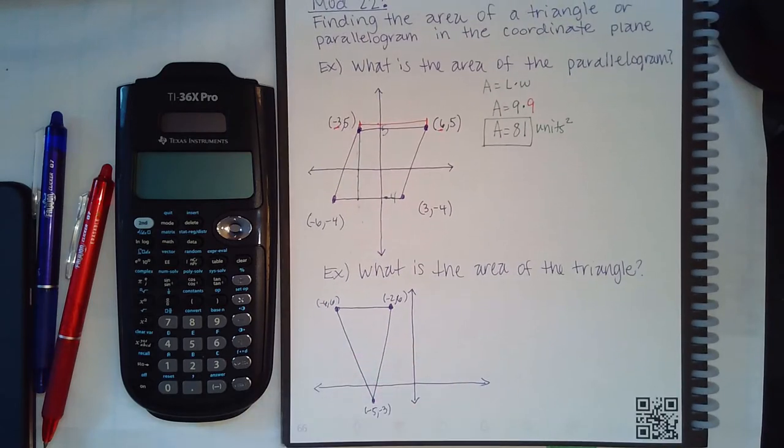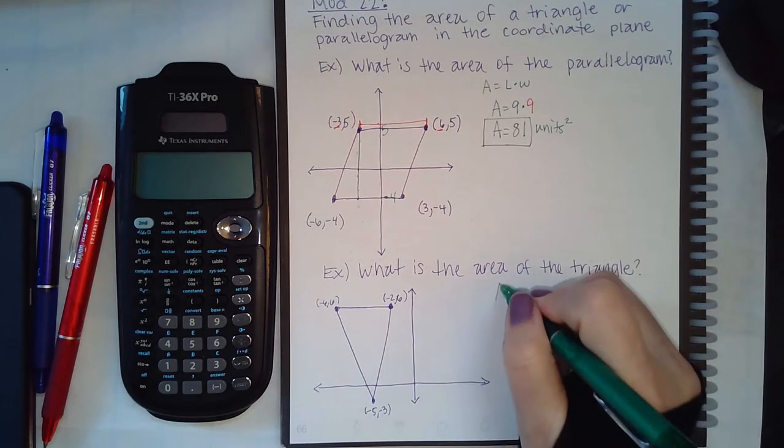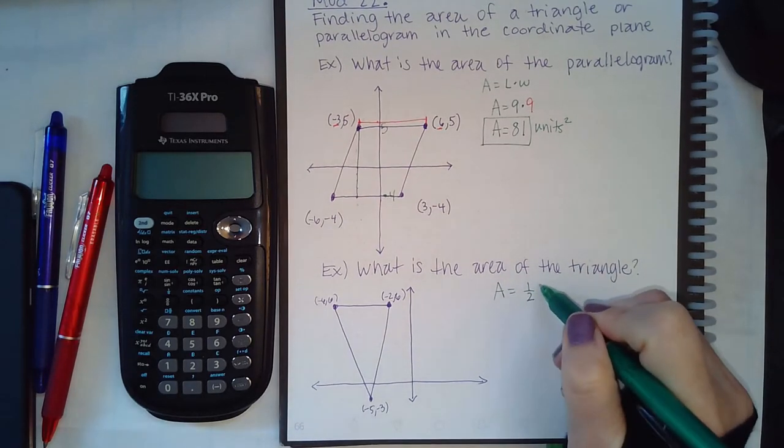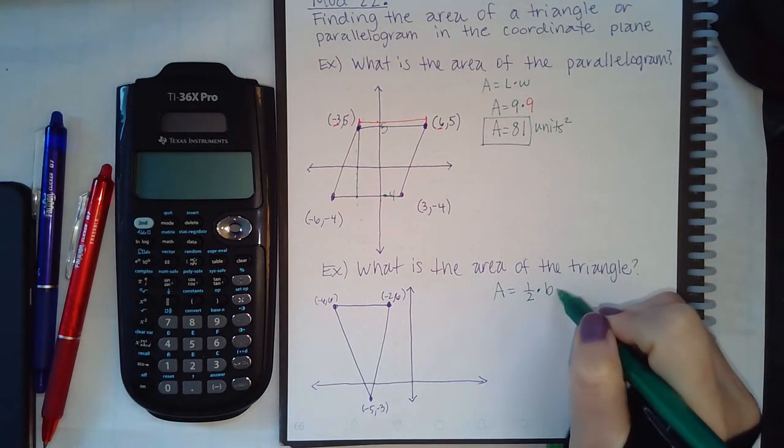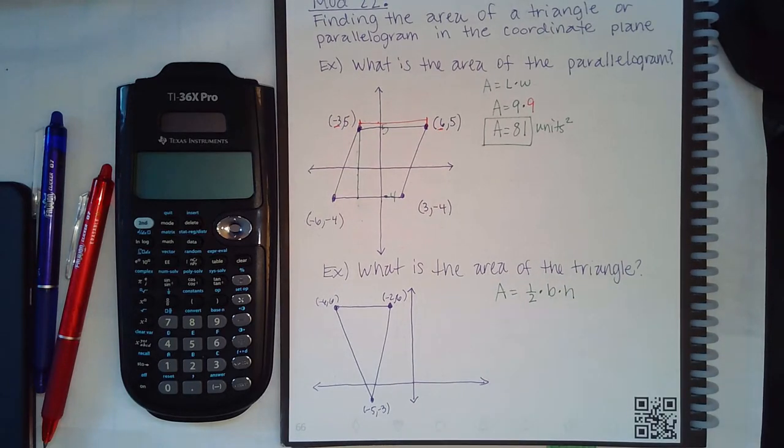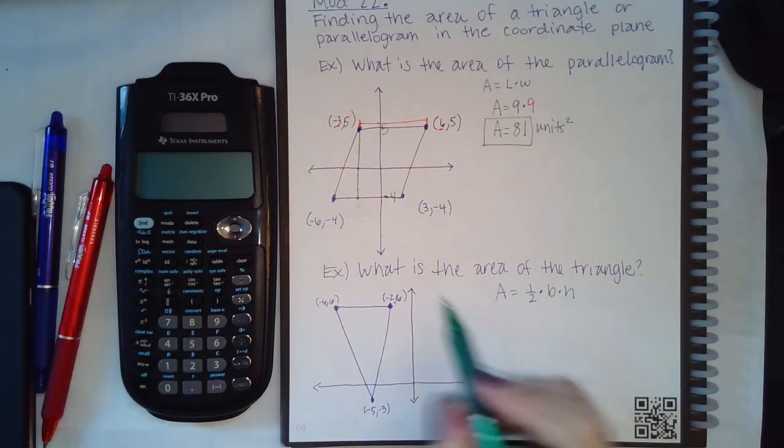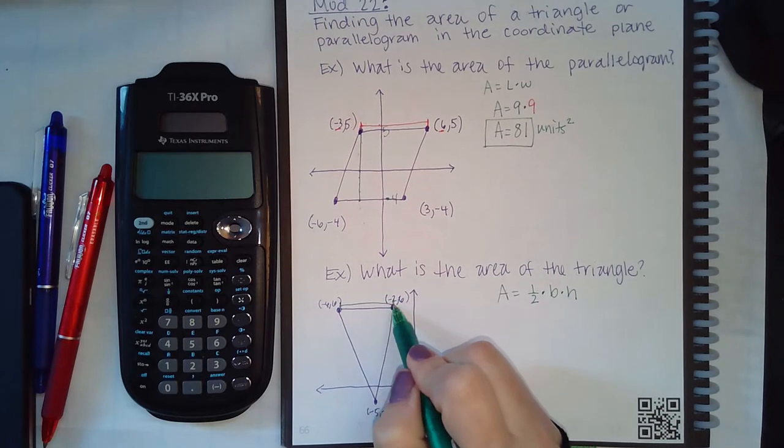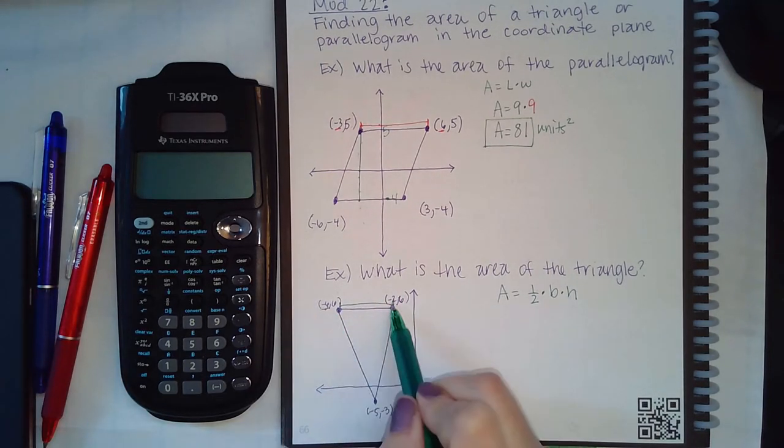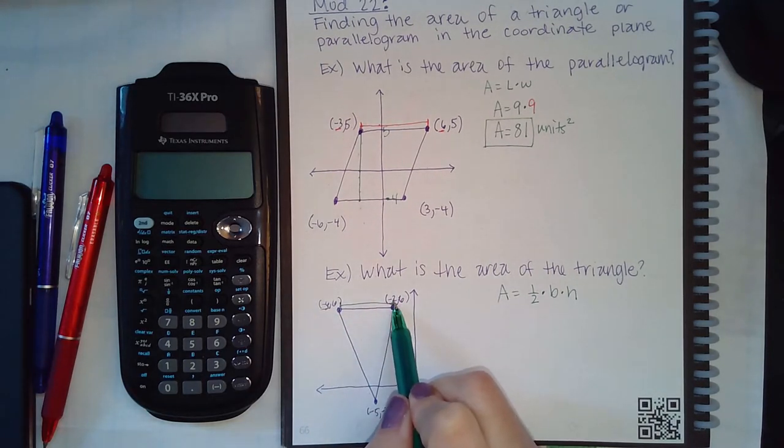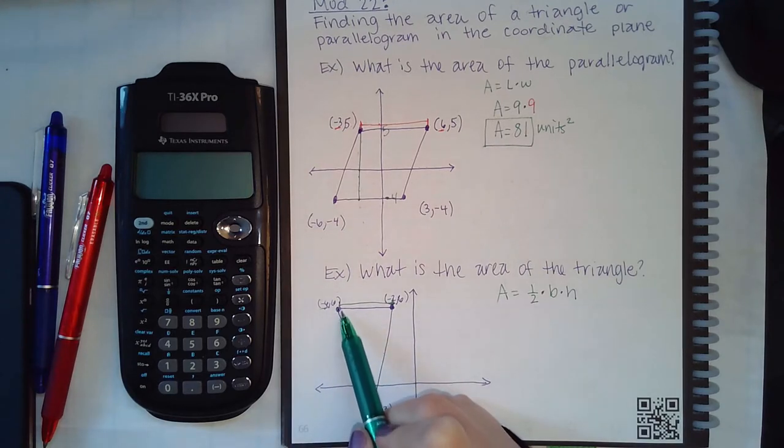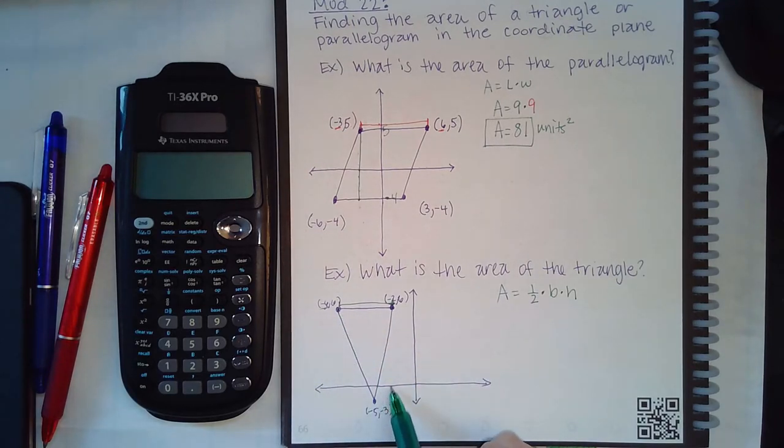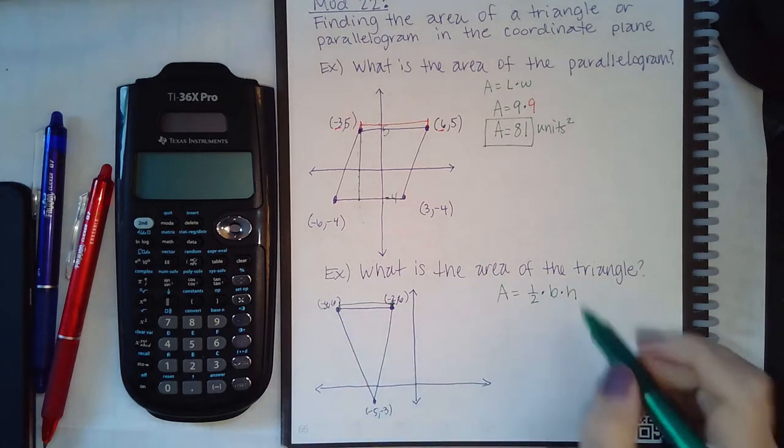Now the same thing for the area of the triangle. The area formula for a triangle is one-half times the base times the height. For the base, you can use these numbers here - how many units have passed? If the x value here is negative 6 and the x value here is negative 2, or if you count it, we should have crossed over 4 units.